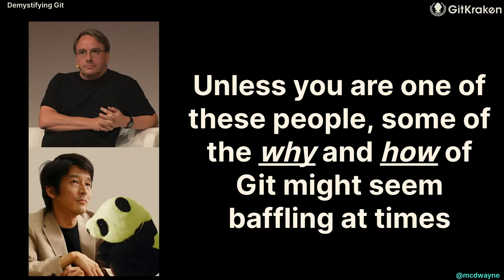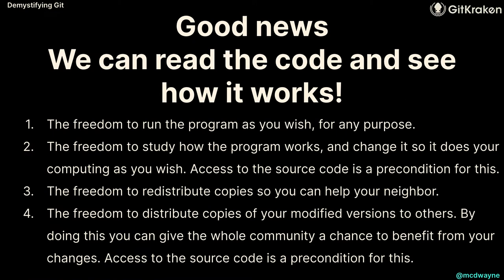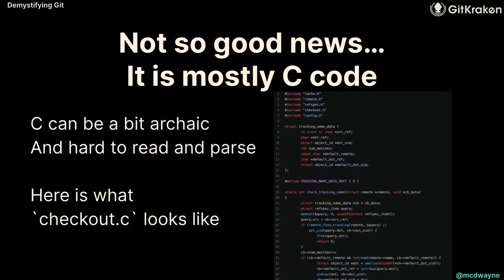Unless you're these two guys, you probably don't understand much of how Git works. Gitster — that's Junio — still maintains it today. He took over the project five months after it was invented by Linus, who said in the original email: 'I have an idea of how to manage patches better — I don't think this is ever going to become a full source control management system.' Literally in the first email. The good news: you can go figure out how it works, because it's open source.